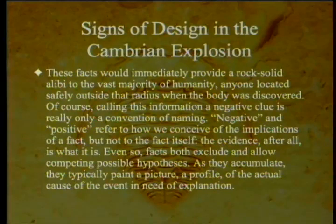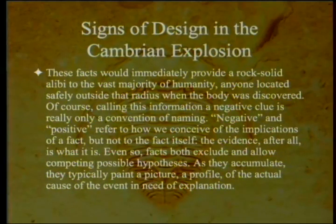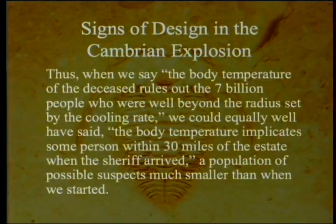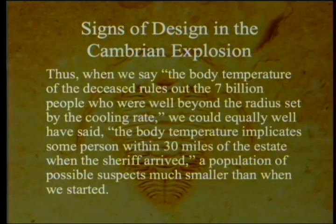Calling this a negative clue is really only a convention of naming. Negative and positive refer to how we conceive the implications of a fact, not to the fact itself. The evidence is what it is. Facts both exclude and allow competing possible hypotheses. As they accumulate, they paint a picture of the actual cause. The body temperature of the deceased rules out 7 billion people beyond the radius set by the cooling rate, but equally implicates someone within 30 miles of the estate — a population of possible suspects much smaller than when we started.